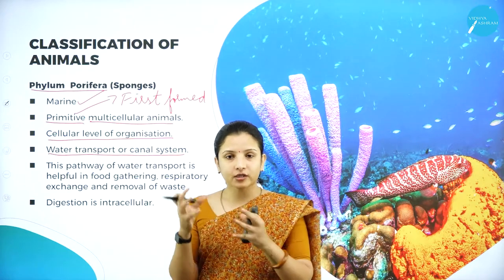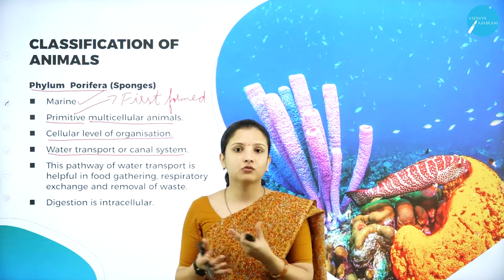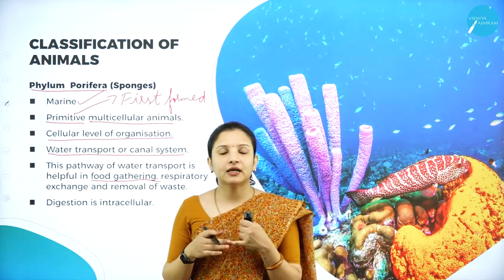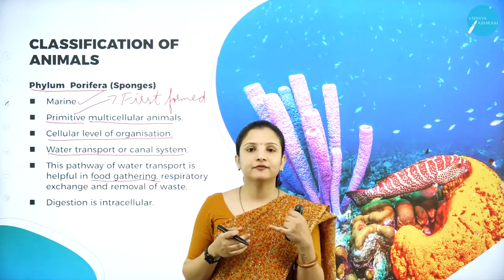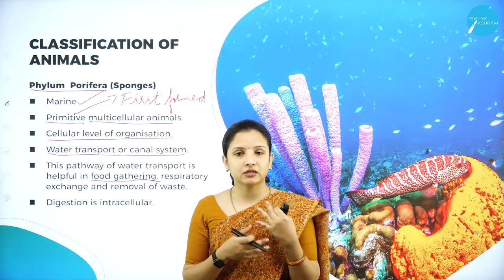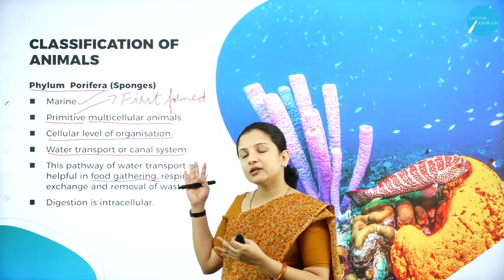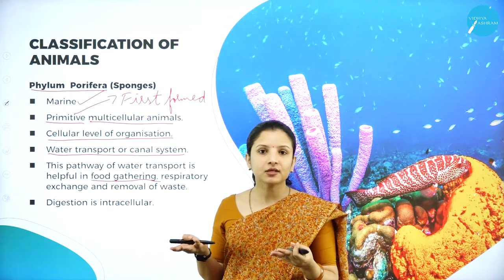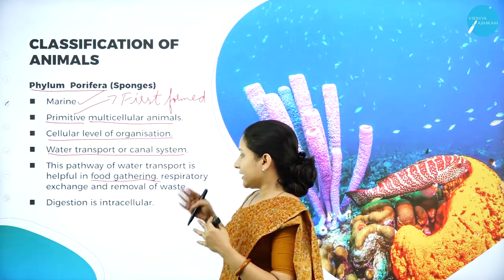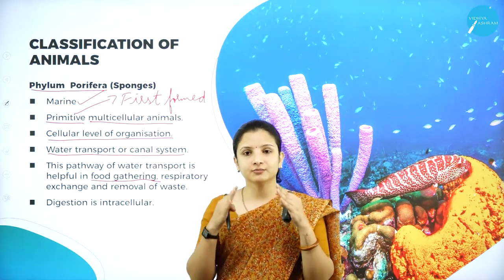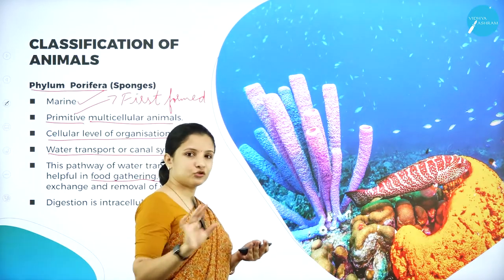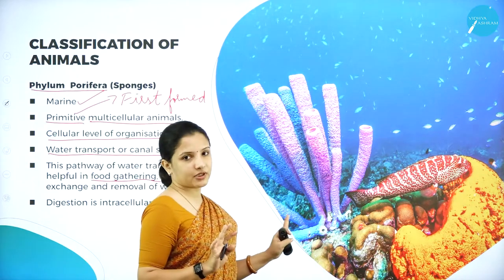When water is transported through that canal, food is also gathered there. We animals have a separate respiratory system for respiration and a digestive system for digestion. But in sponges there is no organ system - it is just a cellular system. So everything - respiration, transport of water, passage of food, and removal of waste - all takes place through one particular canal. Inside this tube there are no organs, only cells are present. That is cellular level of organization.